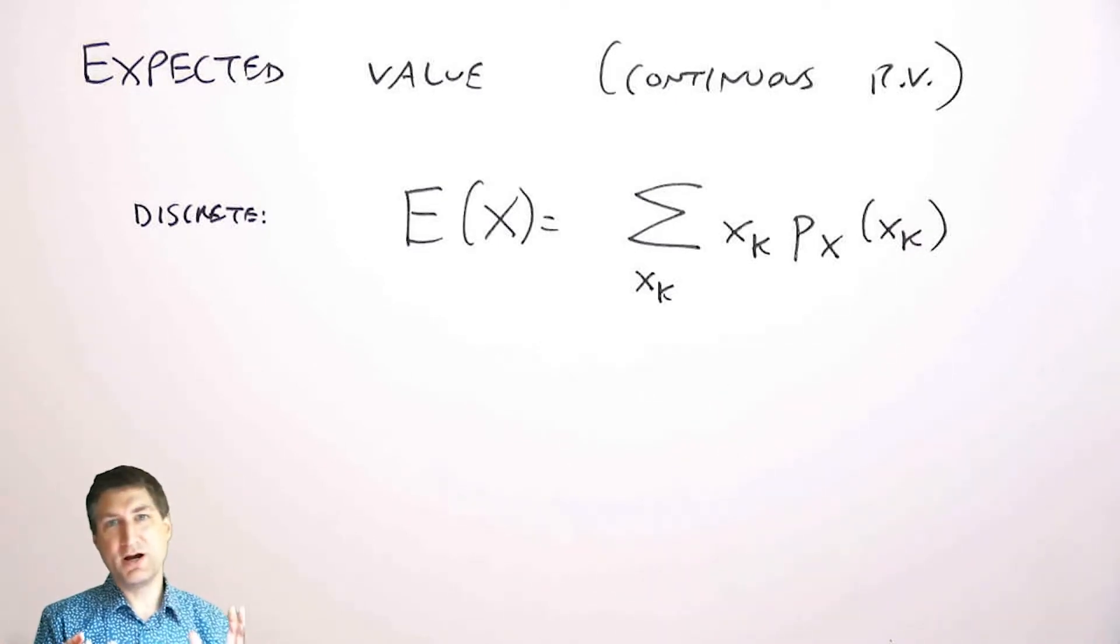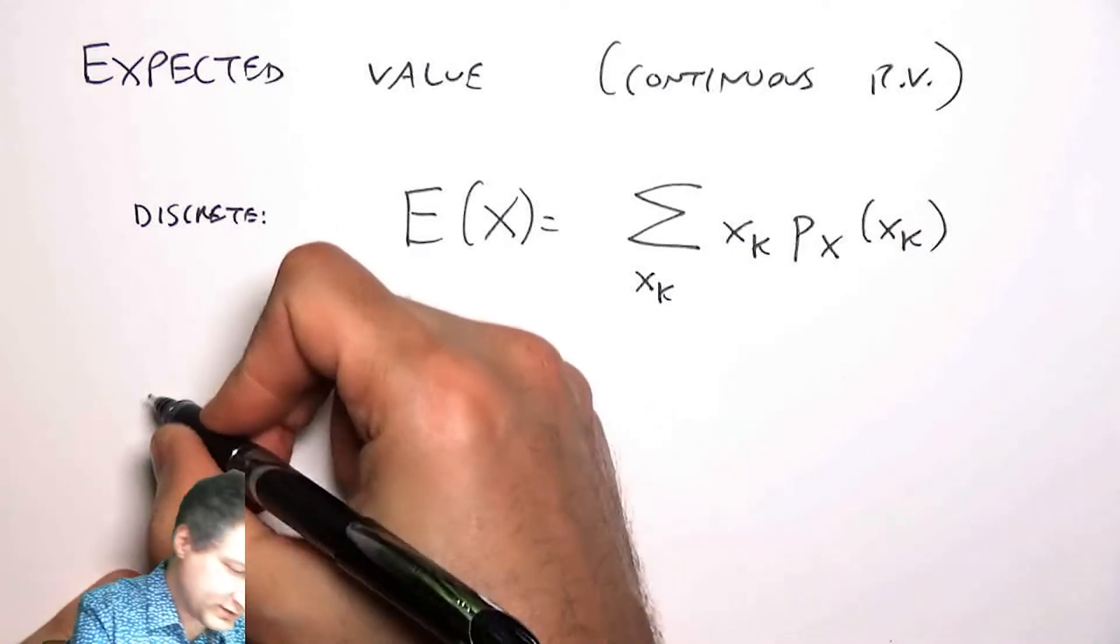So now I'm in a world where I don't just have a set of outcomes I can count on my fingers, I have an infinite possible number of outcomes, so I can't just do a simple sum, I have to integrate basically over the whole real line.